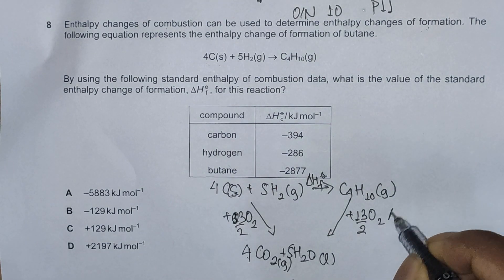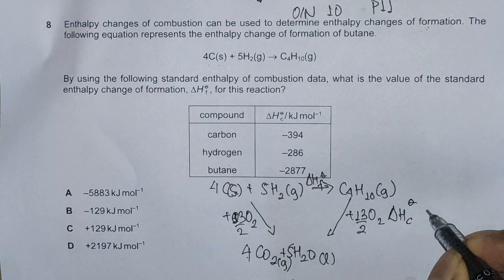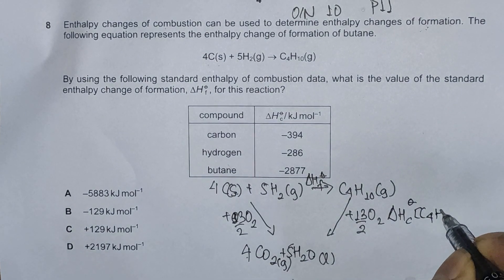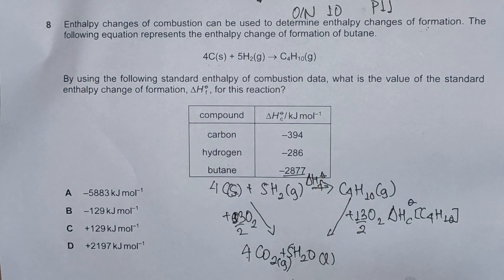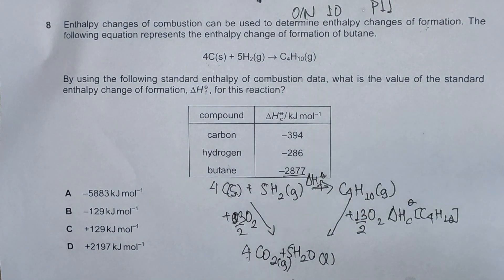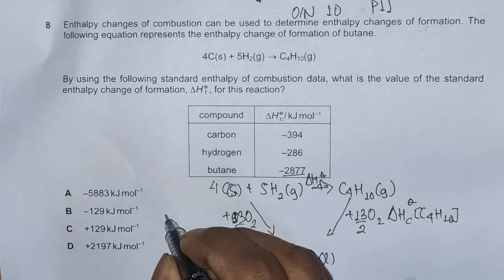Now this side represents enthalpy change of combustion of butane. So we can write this as delta HC naught of butane with the value given here, minus 2877 kilojoules per mole.